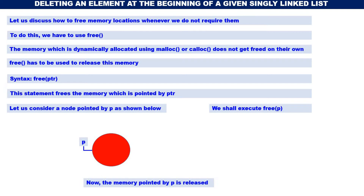free() is used to release memory whenever we do not require it. Whenever we require memory, we allocate it using malloc() or calloc(). Similarly, whenever we don't require memory, we should return it back to the operating system using free(). This free() is used whenever we are deleting elements in linked list deletion functions. Now let us discuss how to delete an element at the beginning of a given singly linked list.